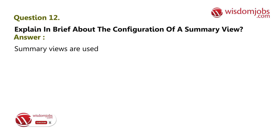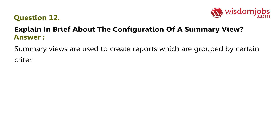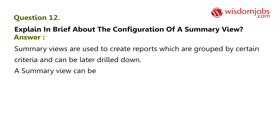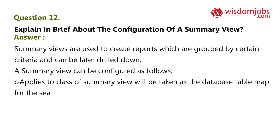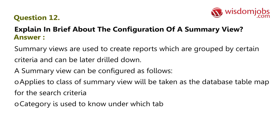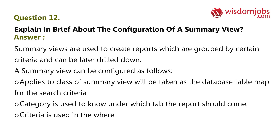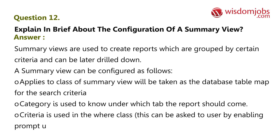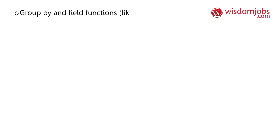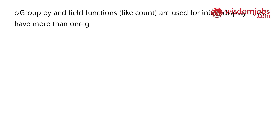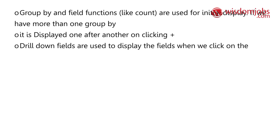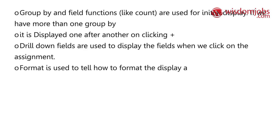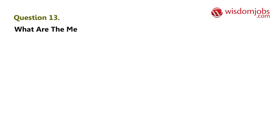Question 12: Explain in brief the configuration of a summary view. Answer: Summary views are used to create reports grouped by certain criteria and can be drilled down. Configuration includes: 'applies to' class as the database table map; category to specify which tab the report appears under; criteria used in the WHERE clause, which can prompt the user; group-by and field functions like count for initial display; if more than one group-by, they are displayed one after another on clicking plus; drill-down fields displayed on clicking an assignment; format for display formatting; and charts can also be used.